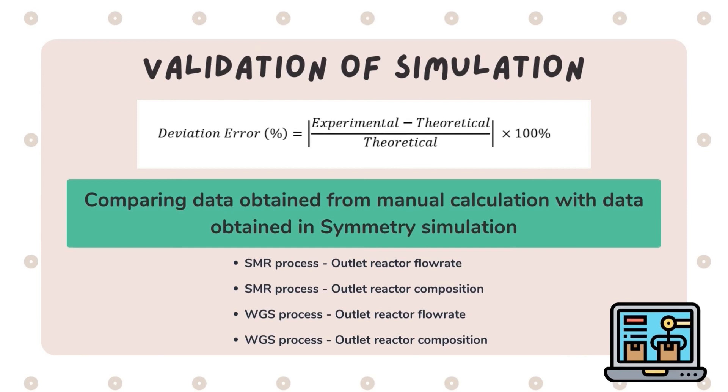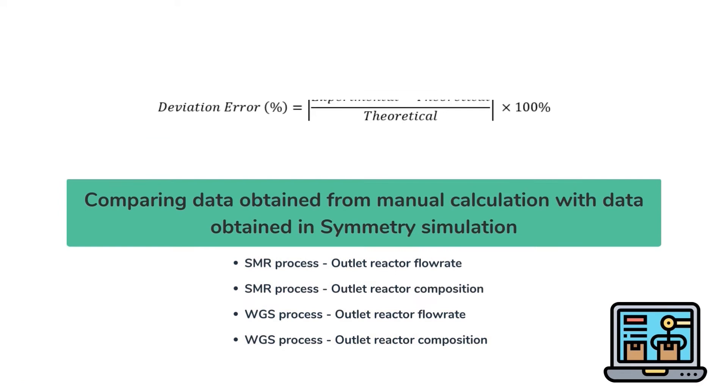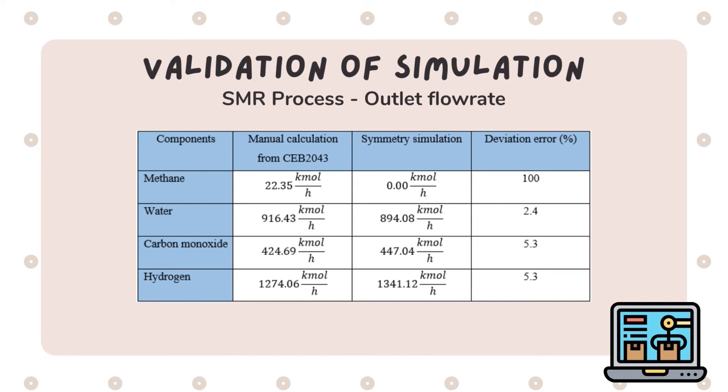One of the goals in this part is to validate and compare the value obtained from previous part with the experimental data obtained through the simulation. The deviation error is calculated by comparing theoretical value, which is the calculated value, with the experimental data, which is the data obtained from Symmetry. In SMR process, outlet flow rates were compared. The deviation error calculated for water is 2.4% while carbon monoxide and hydrogen were 5.3%. However, the percentage error for methane were 100%. This result could be explained due to the conversion value, which were 95% for manual calculation, while 100% for the simulation.